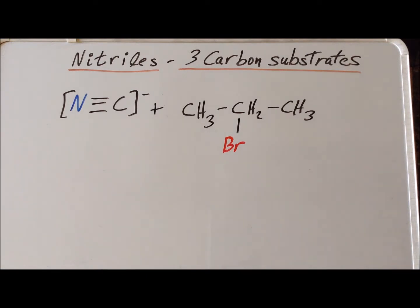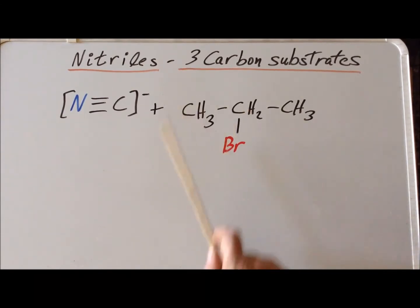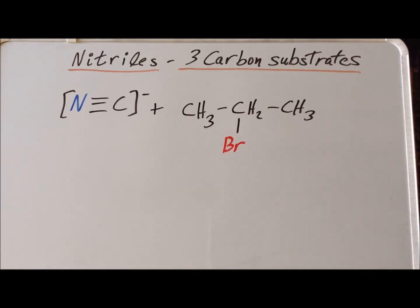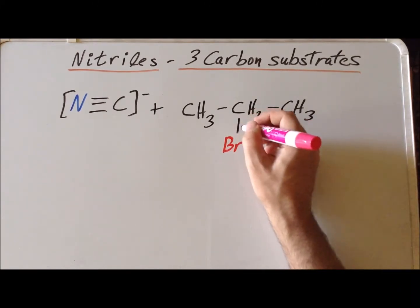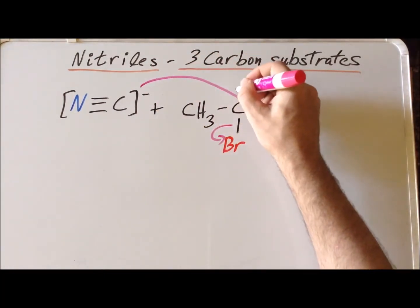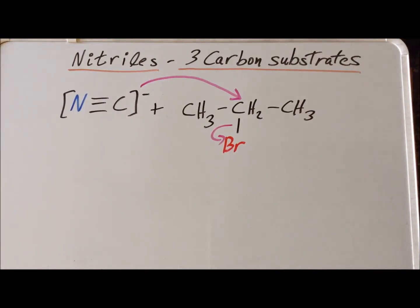Now, suppose that we react cyanide ion with a 2-halopropane substrate, such as 2-bromopropane. Notice that we have a secondary carbon attached to the leaving group, and recall that secondary substrates are generally very ineffective in SN2 reactions. Naively, we might predict that this would proceed like an ordinary SN2 reaction, with heterolytic bond cleavage of the carbon-bromine bond so that bromine would leave as bromide, and nucleophilic attack of cyanide onto the secondary carbon of 2-bromopropane.